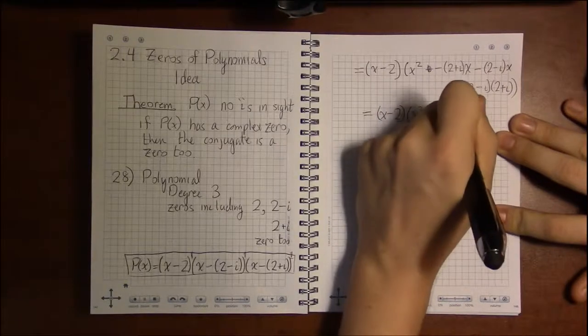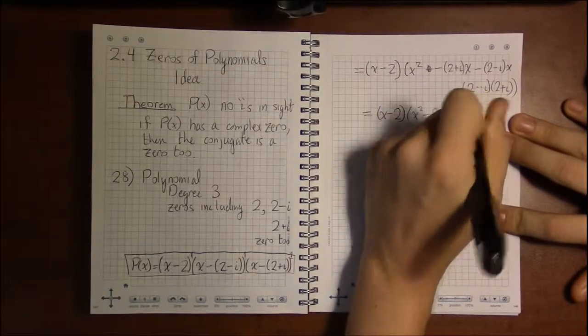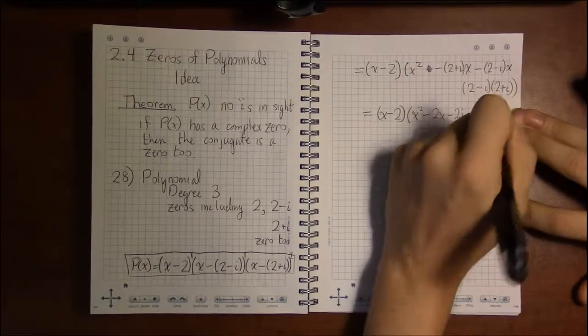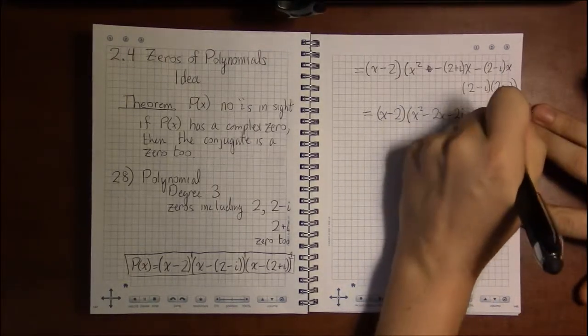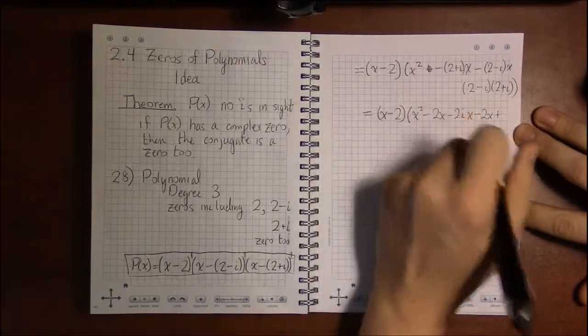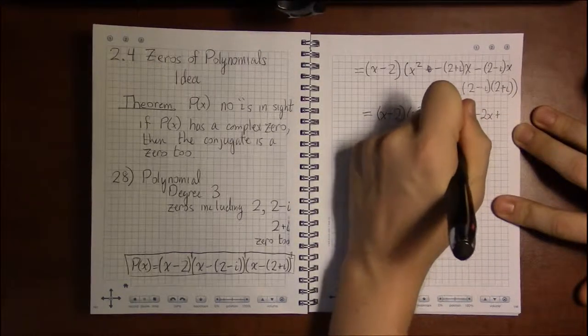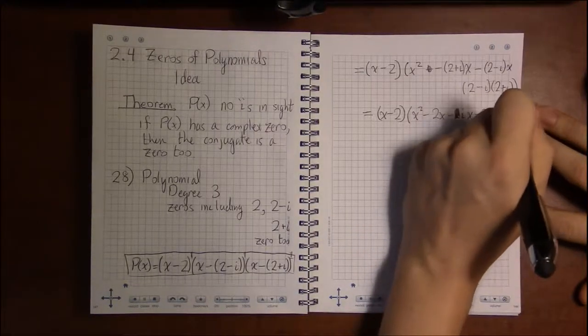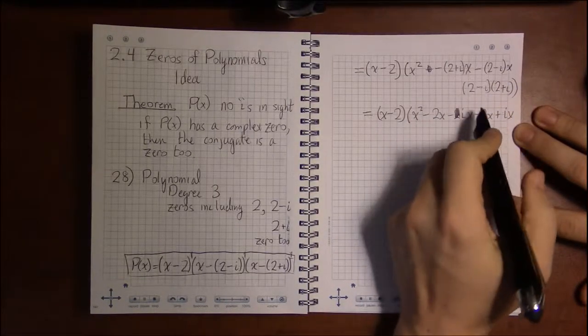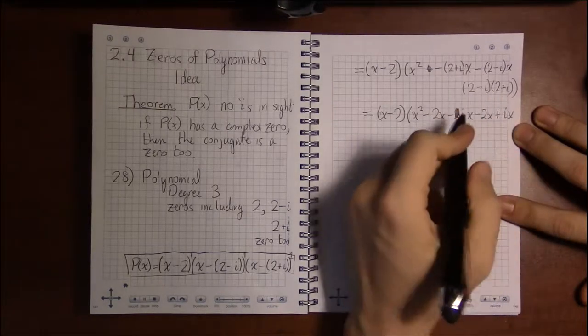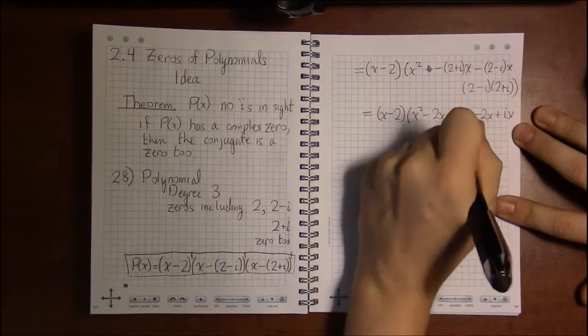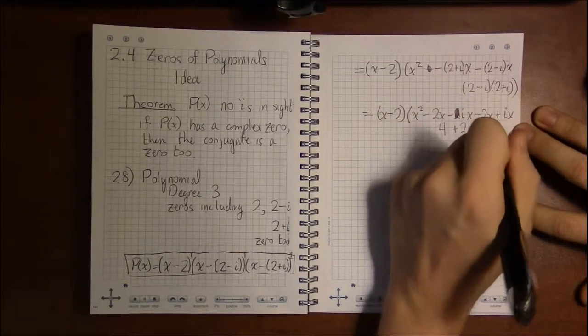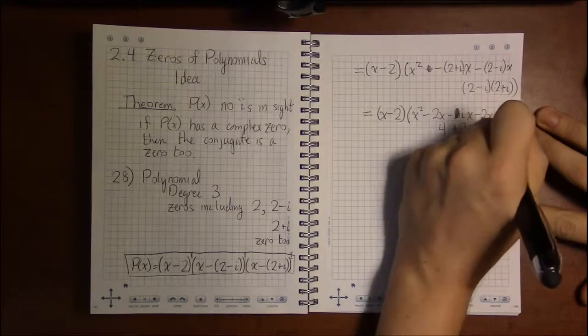So let's see, (x-2) times—let's see what do we have here—we have x²-2x-ix. Actually wait, there wasn't a 2ix, it was just ix, I'm sorry. So that's -ix-2x+ix, and then FOILing this out, 2 times 2 is 4, +2i, -2i, and then -i².